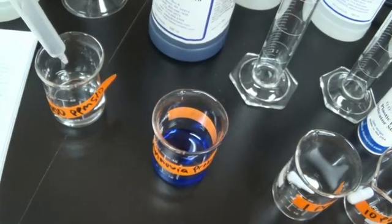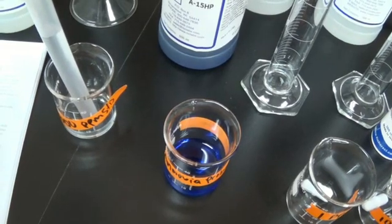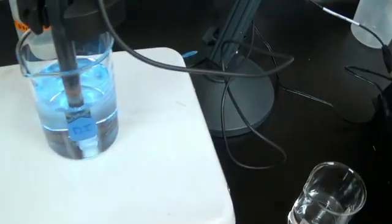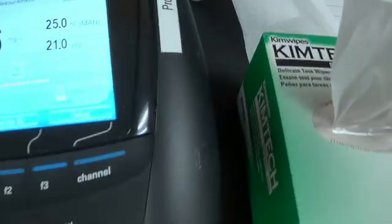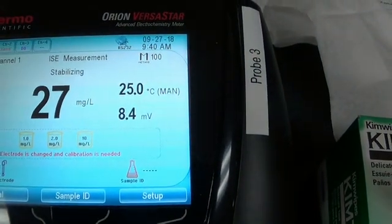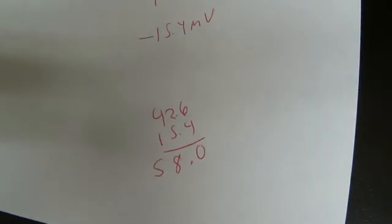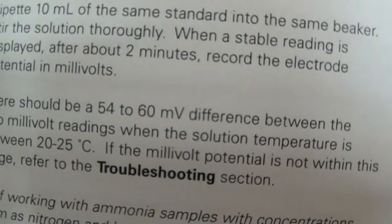So next I'm going to add 10 ml of the 1000 ppm standard. And then I'm going to wait for the millivolts to stabilize. Alright, it is ready. I'm getting a minus 15.4 millivolts. I'll write that down. Alright, I see the difference between the two is 58 millivolts. And what we want is between 54 and 60. So we are good to go.